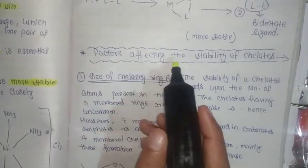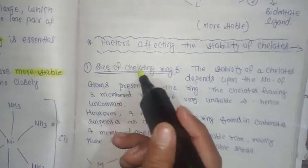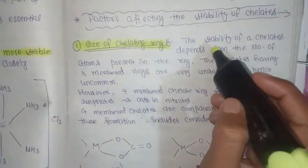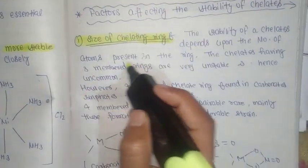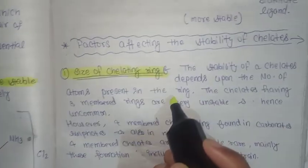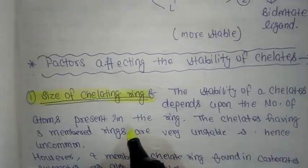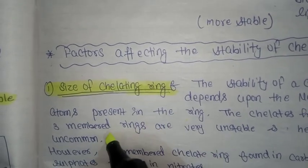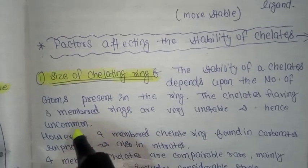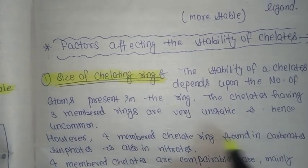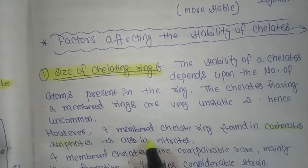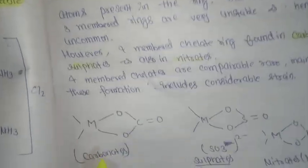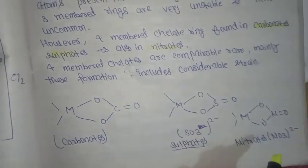Factors affecting the stability of chelates. First is size of chelating rings. The stability of chelates depends upon the number of atoms present in the ring. Chelates having three member rings are very unstable and hence uncommon. Four member chelate rings found in carbonates, sulfates and nitrates are comparably rare mainly because this formation includes considerable strain.